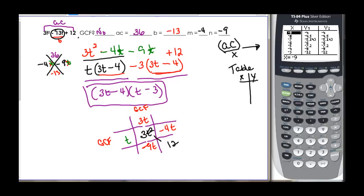We do t times what will give me negative 4t. And that would be minus 4. So there's one factor. And then we have 3t times what will give me negative 9t. And that would be a negative 3.